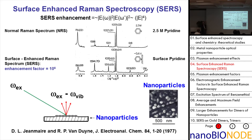This is the Raman spectrum they got, and this is the Raman spectrum of 2.5 molar pyridine in solution. They look pretty similar, but when you figure out the number of molecules being irradiated for a monolayer concentration here compared to what you get in a bulk measurement, there's about a million times difference. Since the signal-to-noise is about the same, that says there's an enhancement factor of 10⁶. That was a big deal discovery back then.